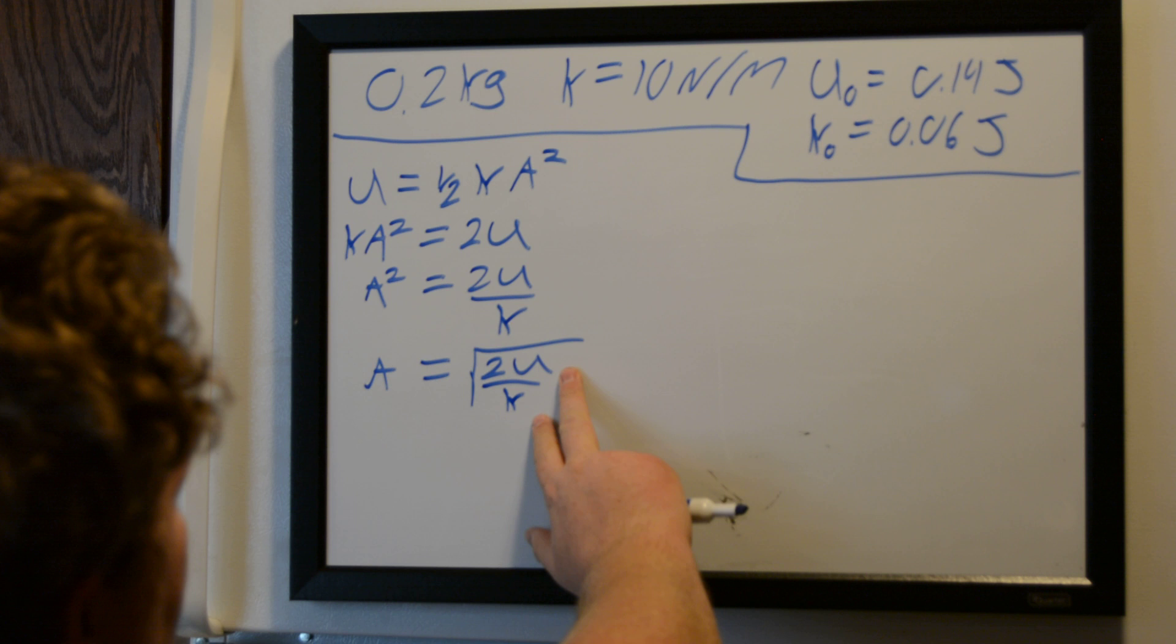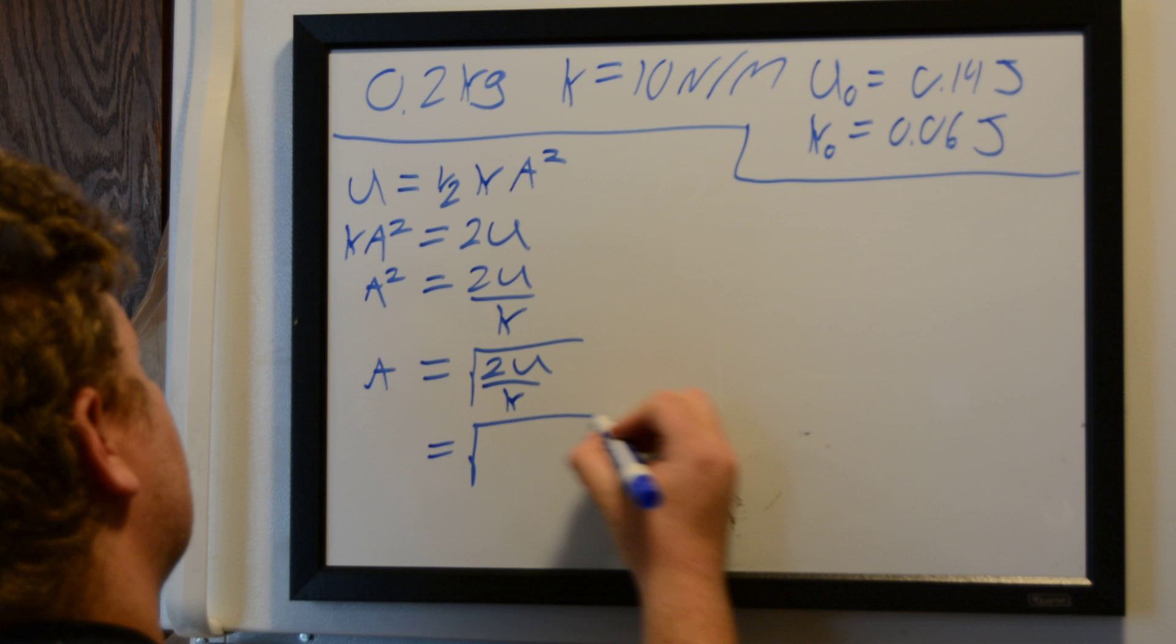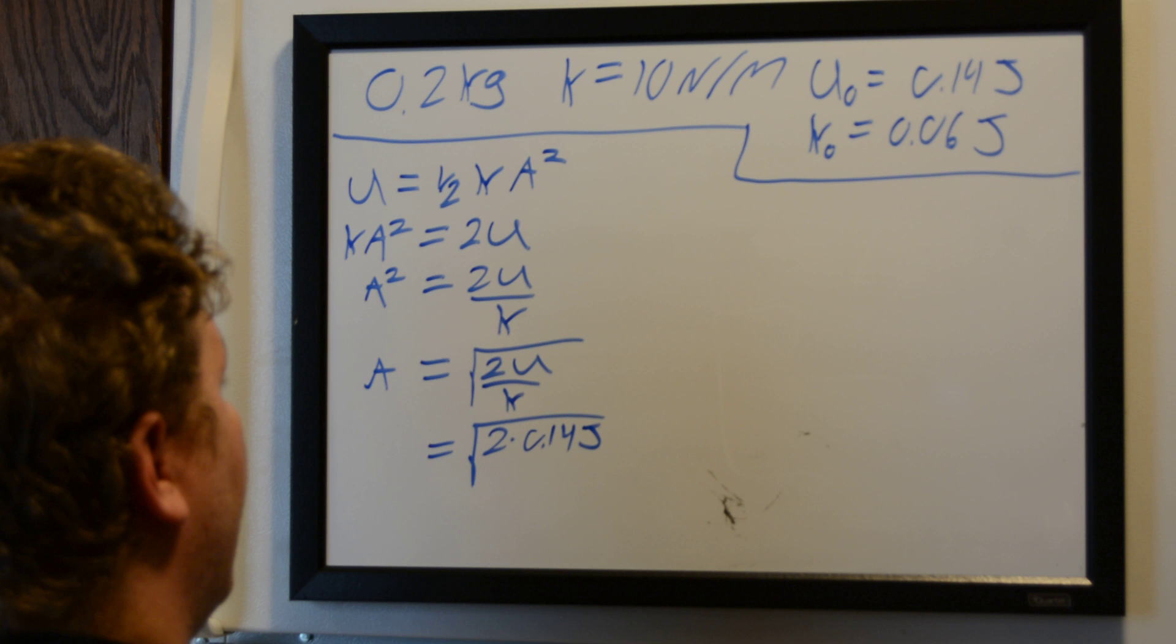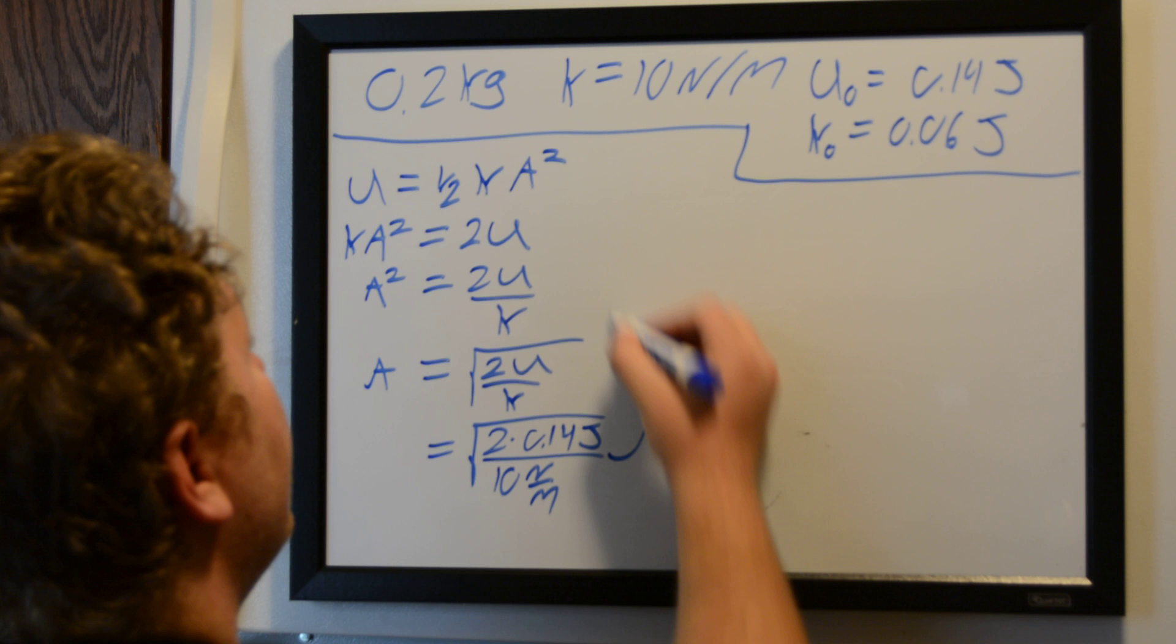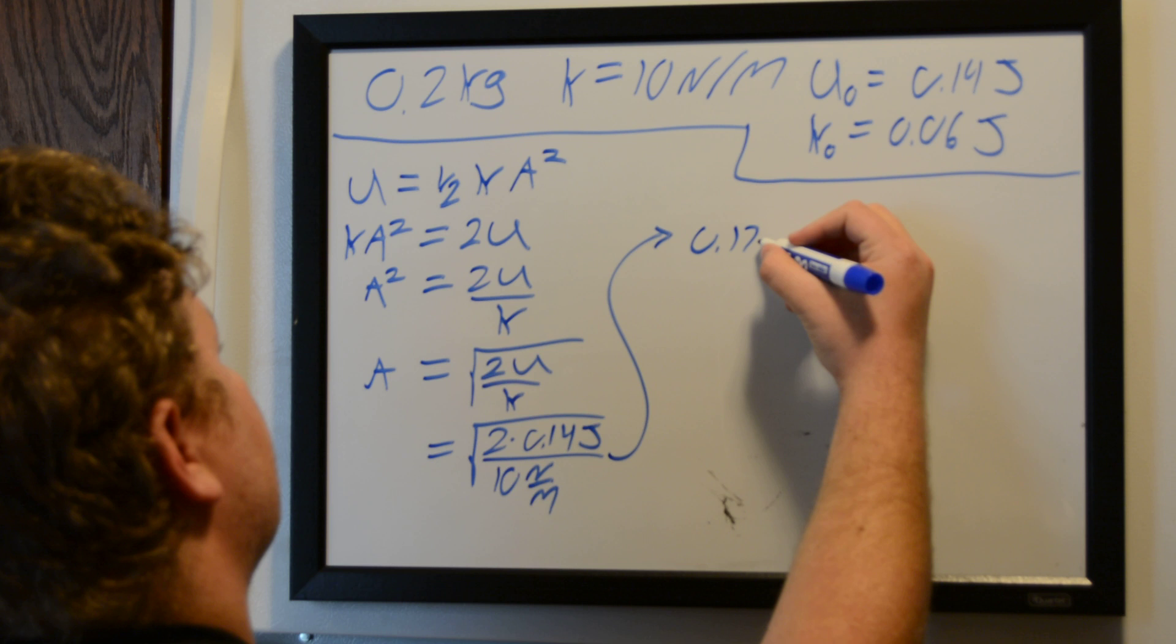And then just solve for, just do all this math anyway. And then that's going to come out to be the square root of twice our potential energy over our spring constant, 0.17 meters or 17 centimeters.